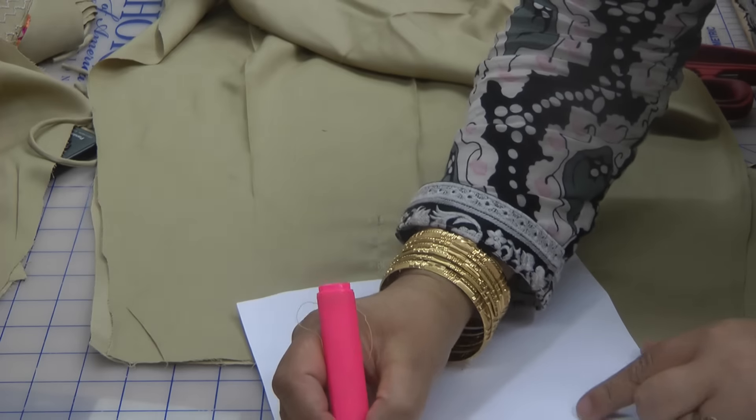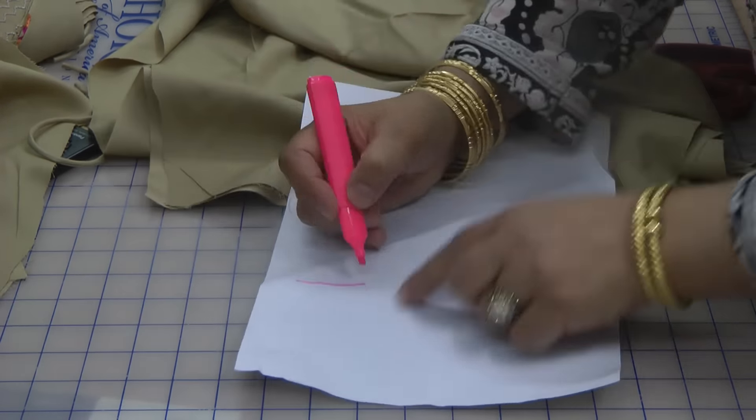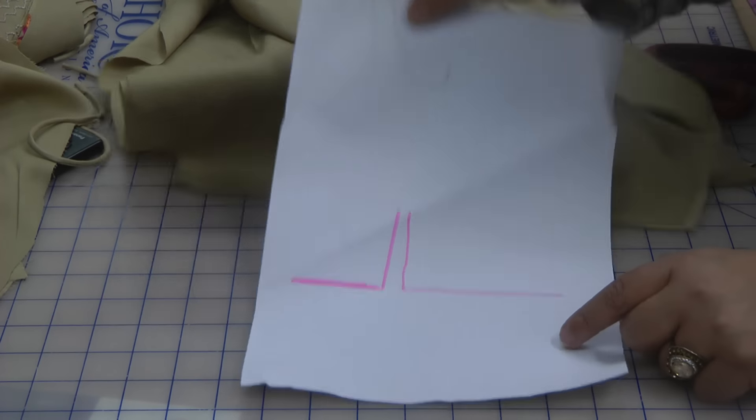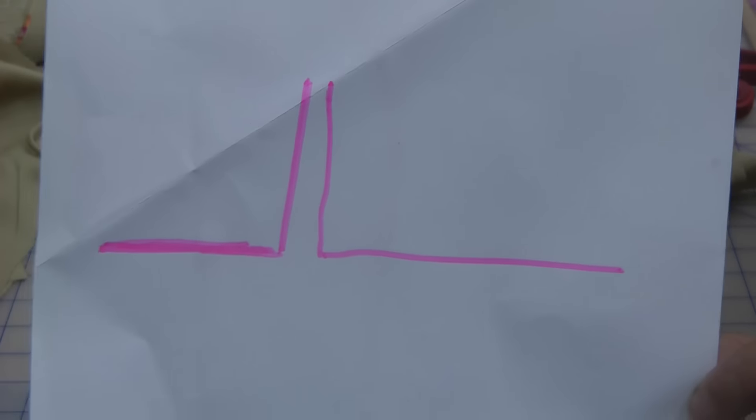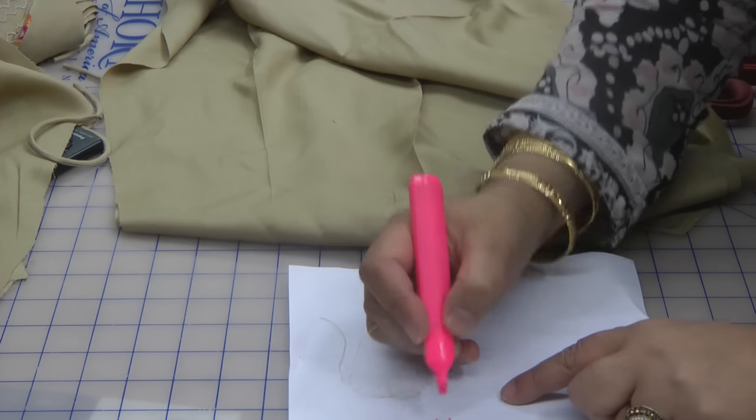What you're going to do is have a seam going up, a seam going across like this, seam going up, a small space left in between, then going down again and going across. You're going to have something looking like that. Then at the center of it, you're going to cut into this.